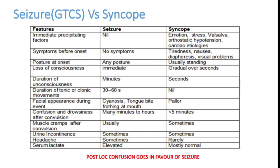Loss of consciousness onset: in seizure it is immediate after symptom onset, but in syncope it takes a few minutes. Duration of unconsciousness is many minutes in seizure, but only seconds in syncope — immediately after falling, the patient regains consciousness, which is classical for syncope. Tonic-clonic activity is mainly seen in seizure and may not be seen in syncope.